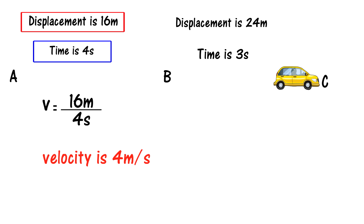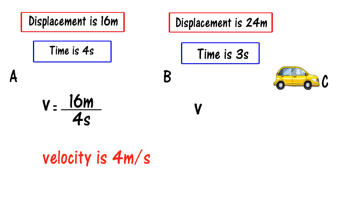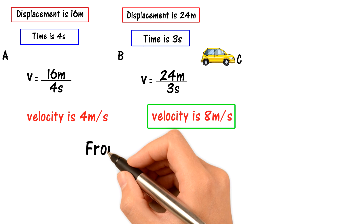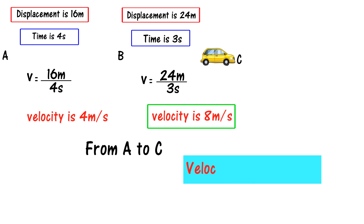Now for point B to point C: displacement is 24 meters and time is 3 seconds. So velocity equals 24 meters divided by 3 seconds, which equals 8 meters per second. From A to B the velocity was 4 m/s, and from B to C it is 8 m/s — velocity is changing, so we say velocity is non-uniform.